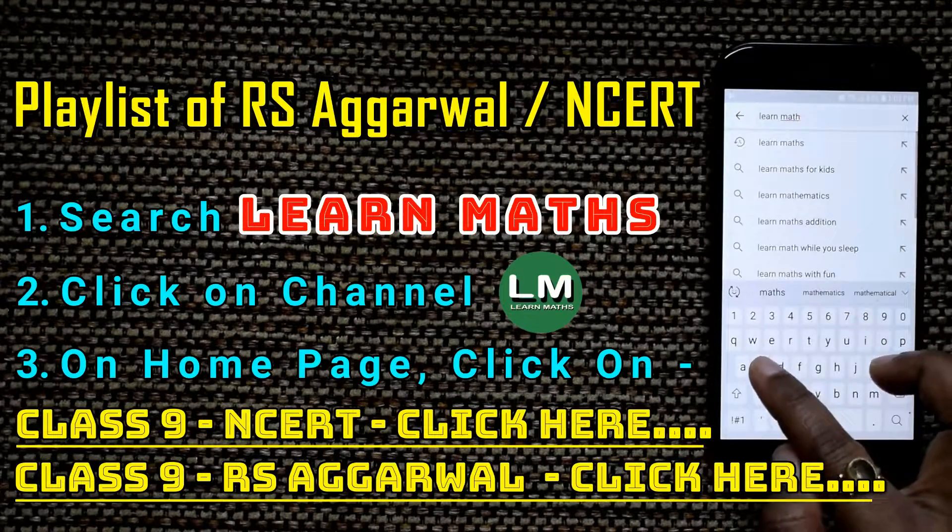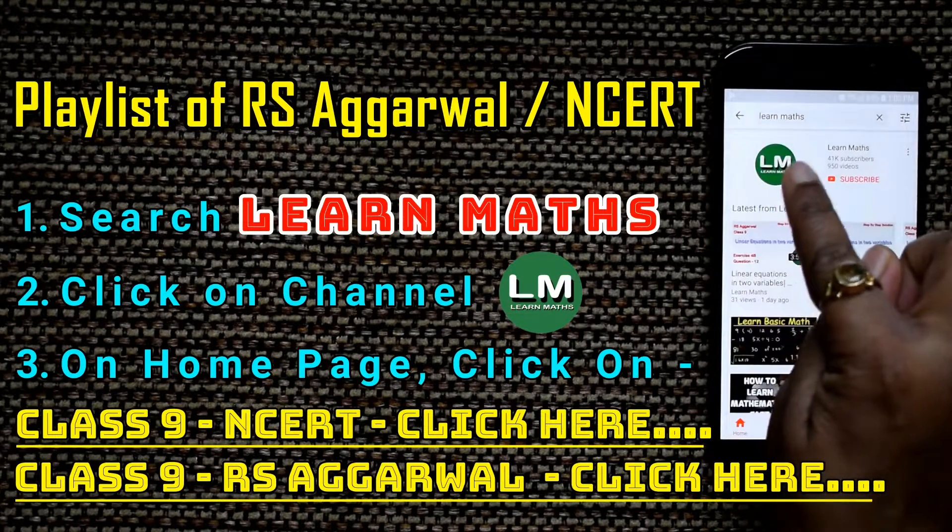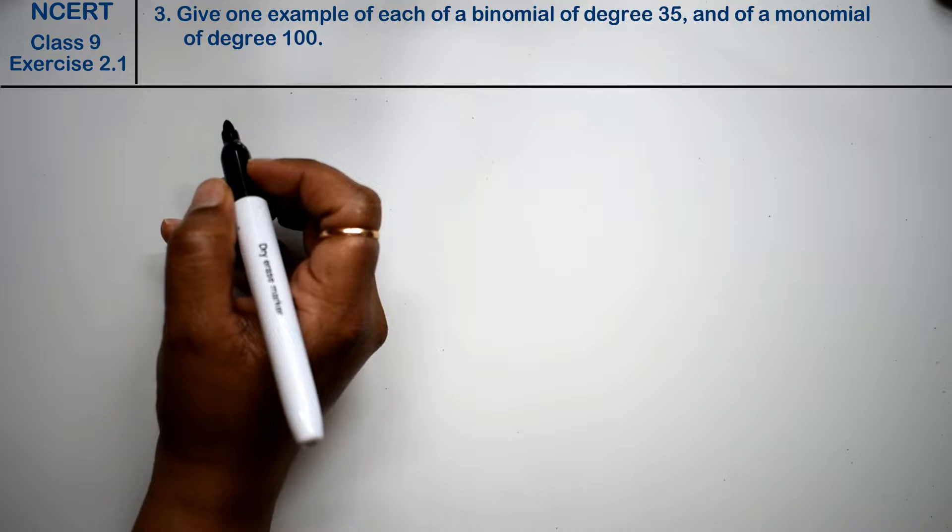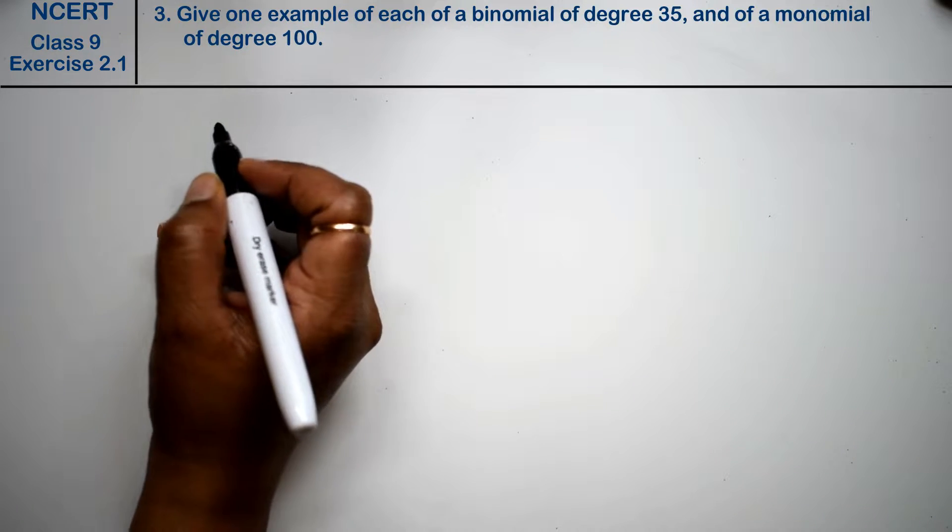Let's do question number 3 of exercise 2.1, which is about polynomials. The question is: give one example of a binomial of degree 35.